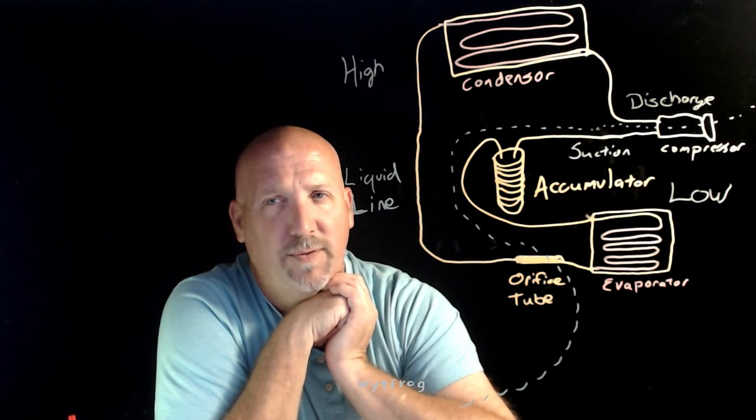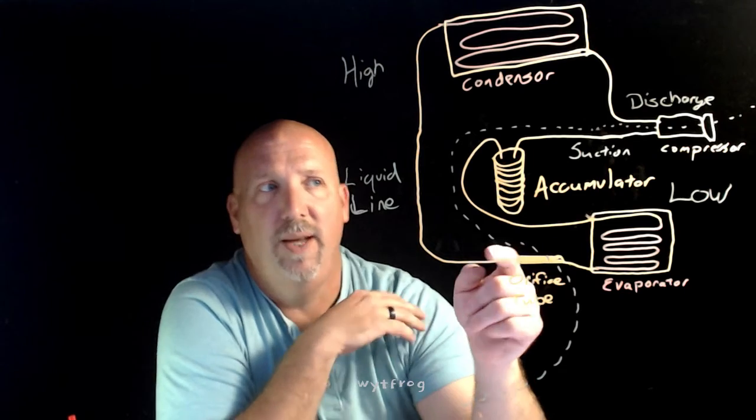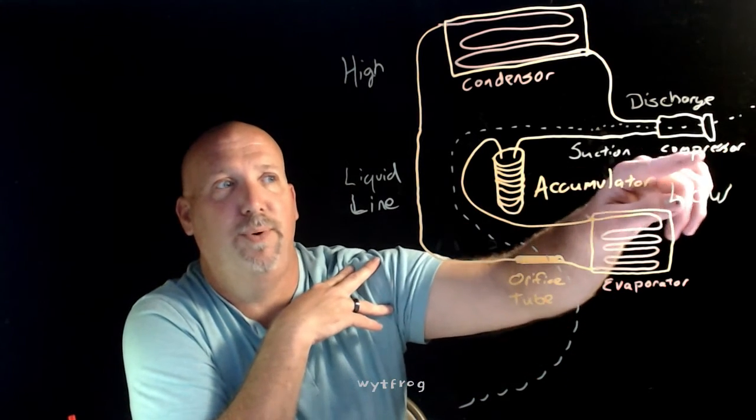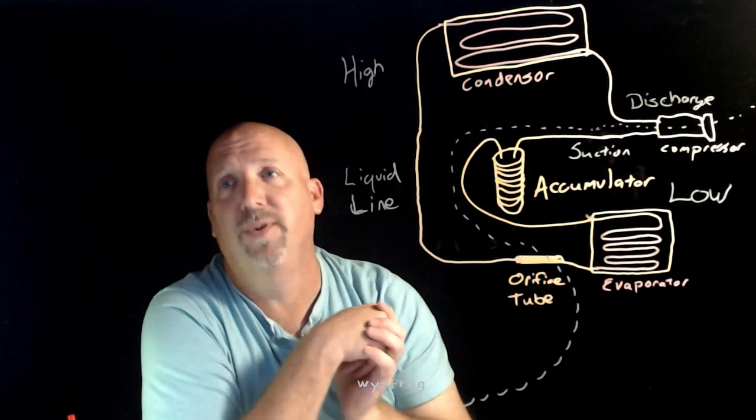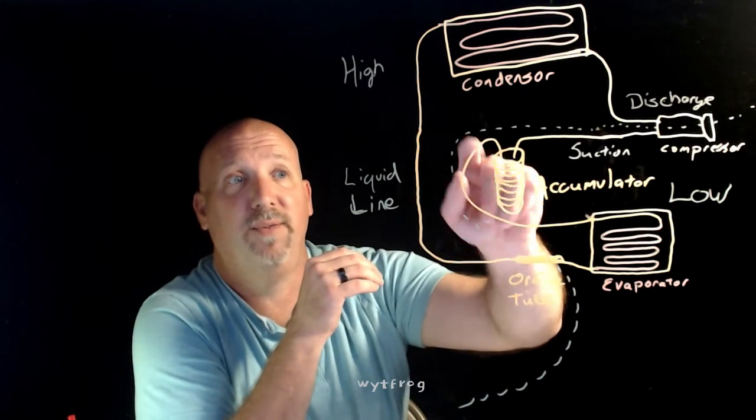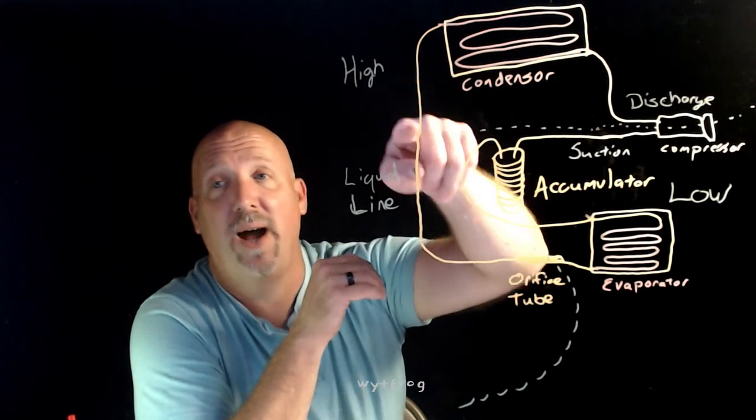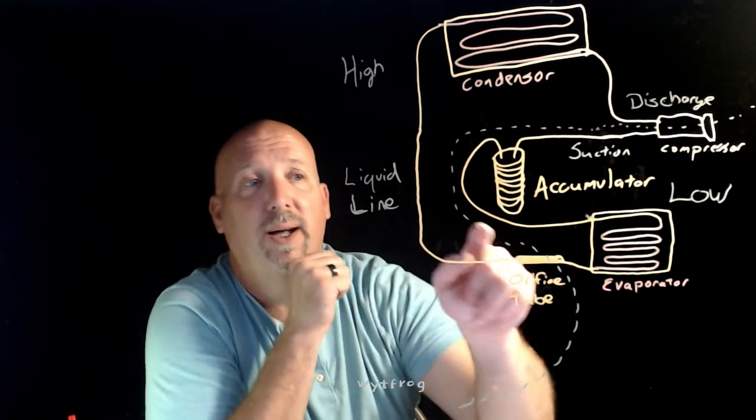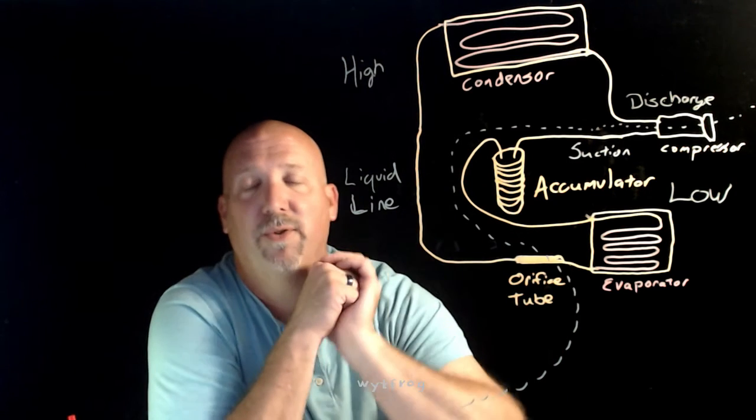Note the placement of the accumulator. If the accumulator is on the suction side of the compressor, you've got an orifice tube system. If the receiver dryer is on the condenser outlet, you've got a receiver dryer system. You'd have a TXV here instead of an orifice tube.